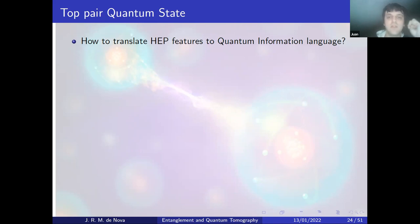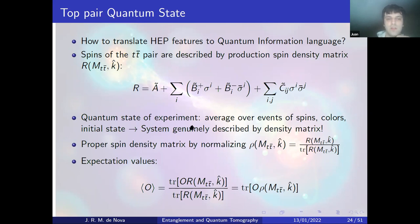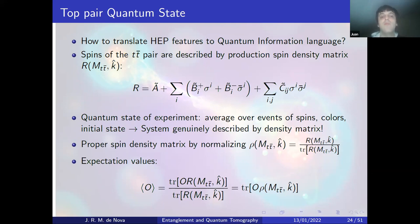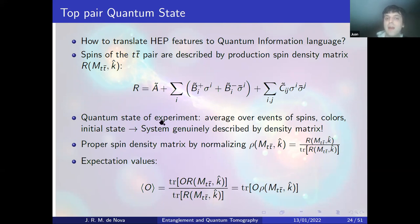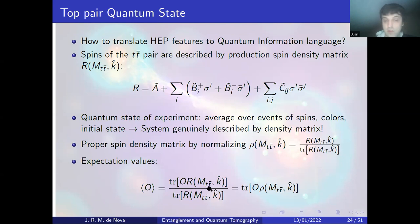We translate high energy physics into quantum information language through the spin production density matrix, which takes a form very similar to the two-qubit spin density matrix. This description is natural because we must average over many events and cannot control the initial state or color degrees of freedom. We obtain the proper normalized density matrix — with trace one — by dividing by the total production cross section. Expectation values for fixed mtt̄ and top direction are then computed as the usual trace product Tr(ρO).